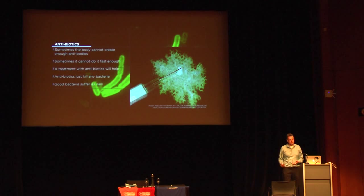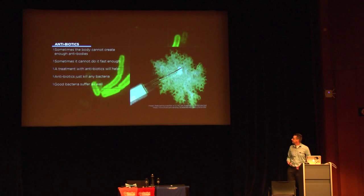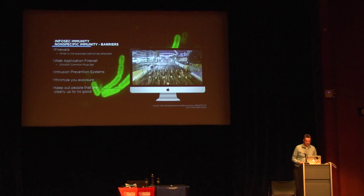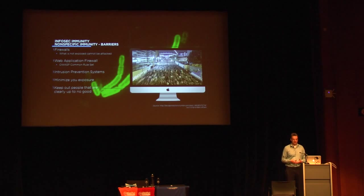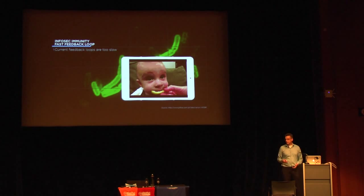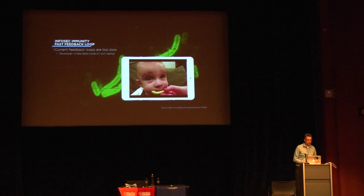So how does this relate to infosec? We have our barriers — firewalls, web application firewalls, intrusion prevention systems — all based on minimizing exposure. What isn't there cannot be attacked; what is blatantly virus-like behavior needs to get killed before it enters the network. Then we get to the feedback loops, and to be honest the feedback loops in a lot of production systems are way, way too slow. You have a developer writing code on their laptop, testing it locally — the classic 'it works on my laptop' phase — committing it, hopefully it gets picked up by a build system which may or may not run unit tests.